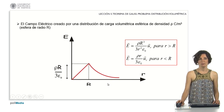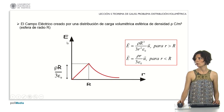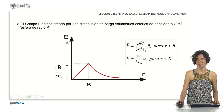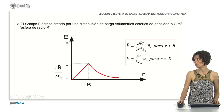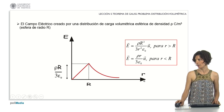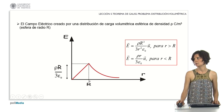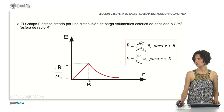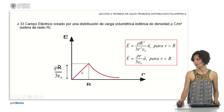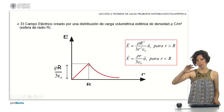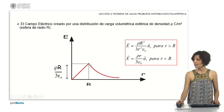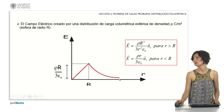Finally, we have plotted the dependence of the electric field modulus created by the spherical volumetric charge distribution of density rho coulombs per cubic meter as a function of distance r from the center. For the inner zone, where r is smaller than R, the dependence is linear — the electric field increases as we approach the surface. From there, as we move away, it decreases.